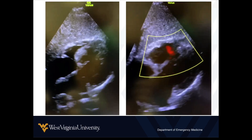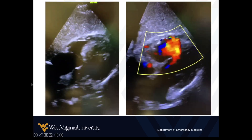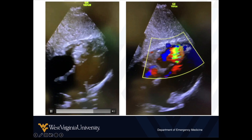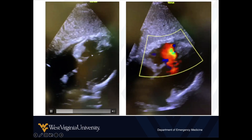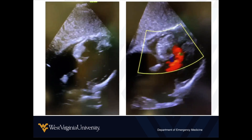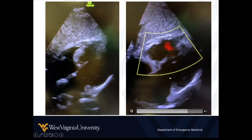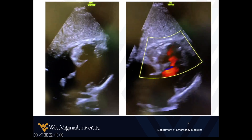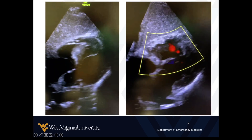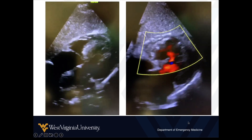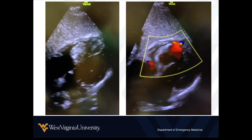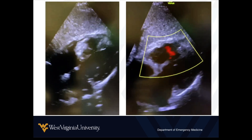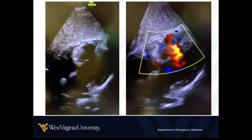One last example — this one was pretty obvious. This is a case where we can see the VSD, and here we can see color with flow moving from the left ventricle to the right ventricle. Even some fingers pointing it out, which just shows you the diagnostic acumen of some of our emergency physicians here at West Virginia University.